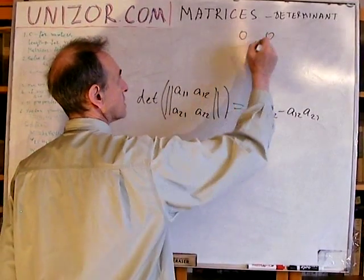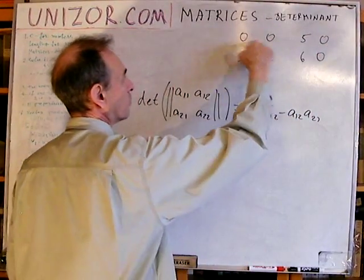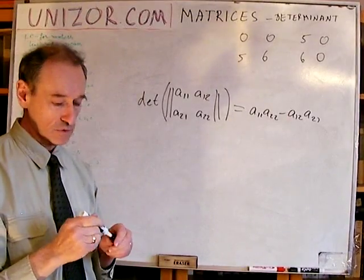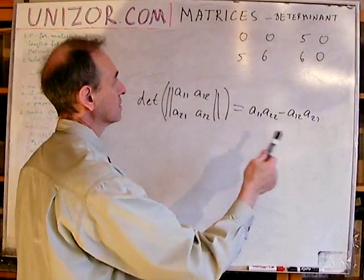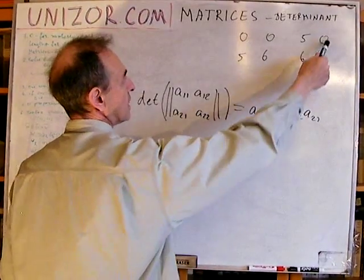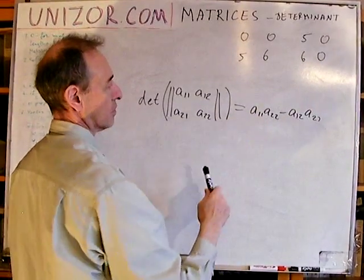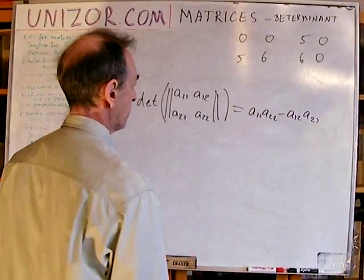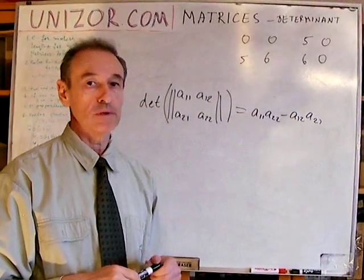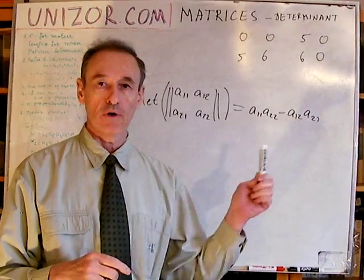For matrices where either the first or second row equals zero, or the first or second column equals zero, you just directly substitute into the formula. In each case, both terms in the determinant expression become zero. Having a row or column completely equal to zero makes the matrix unacceptable for solving linear equations.